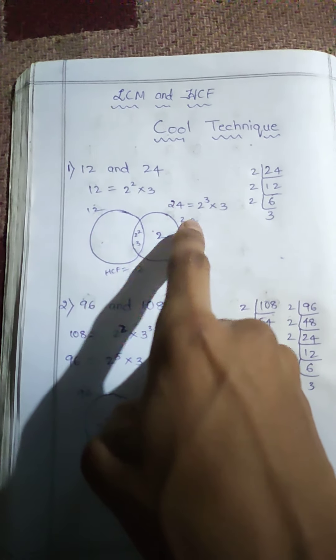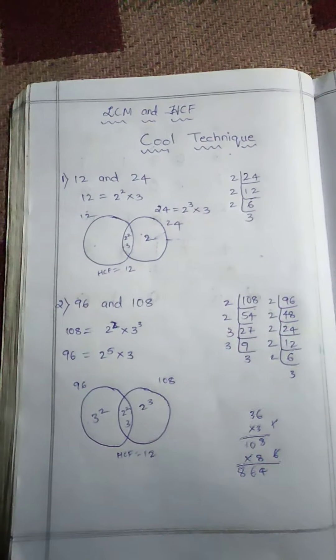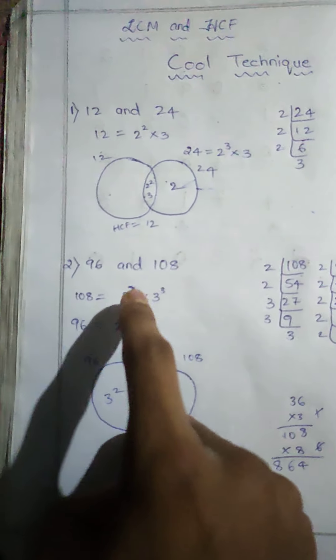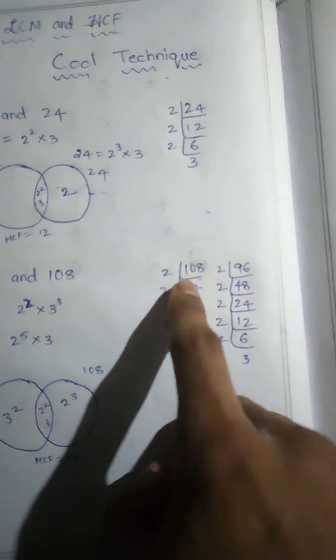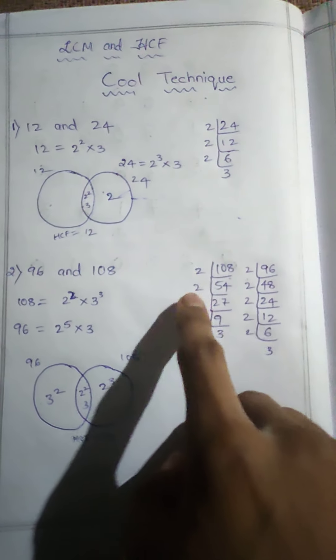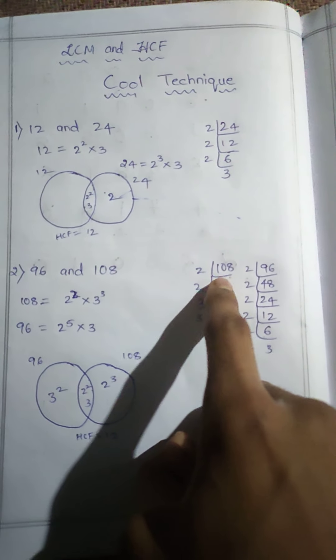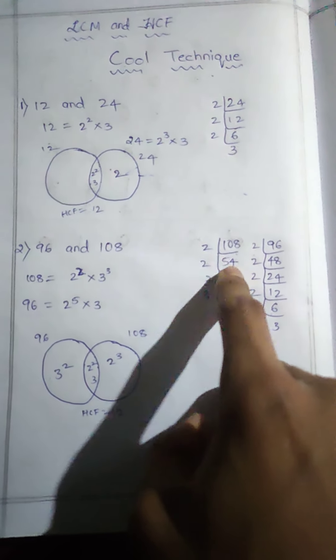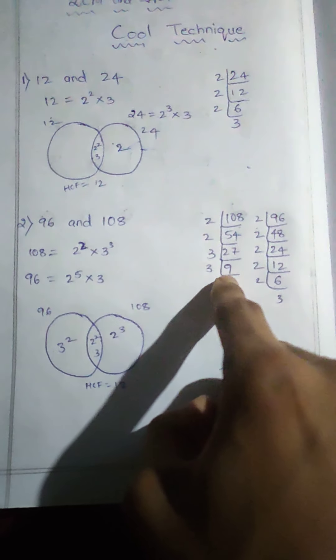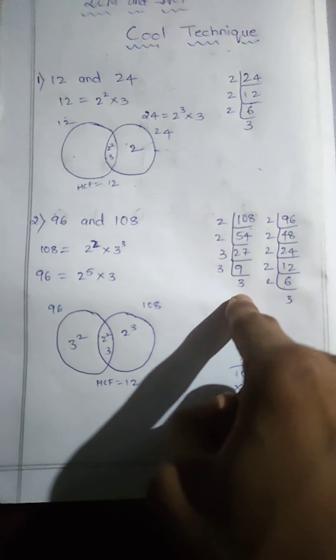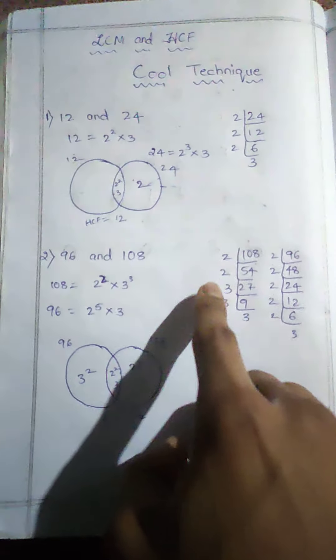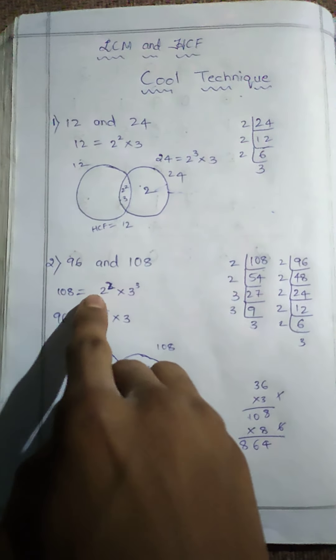Let's go to the next example: 96 and 108. Prime factorization of 108: 108 divided by 2 is 54, 54 divided by 2 is 27, 27 divided by 3 is 9, 9 divided by 3 is 3. We get 2 twice, so 2 squared, and 3 three times, 3 cubed. 108 equals 2 squared into 3 cubed.